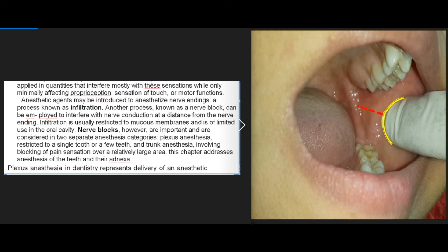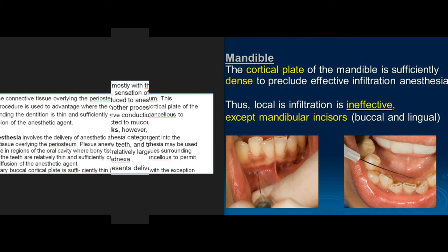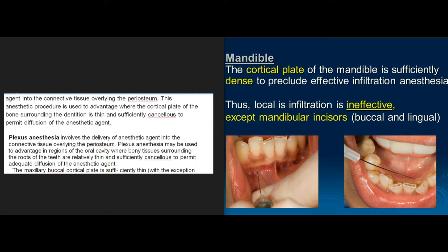Plexus anesthesia in dentistry represents delivery of an anesthetic agent into the connective tissue overlying the periosteum. This anesthetic procedure is used to advantage where the cortical plate of the bone surrounding the dentition is thin and sufficiently cancellous to permit diffusion of the anesthetic agent. Plexus anesthesia may be used in regions where bony tissues surrounding the roots of the teeth are relatively thin. The maxillary buccal cortical plate is sufficiently thin, with the exception of the first molar region, so that plexus anesthesia in this area is advantageous.